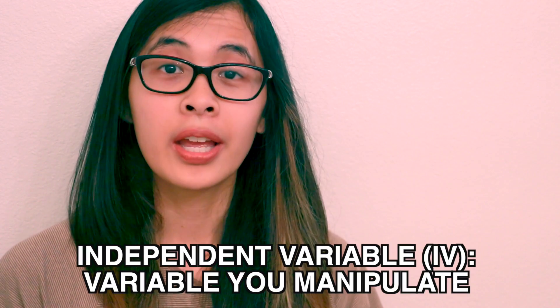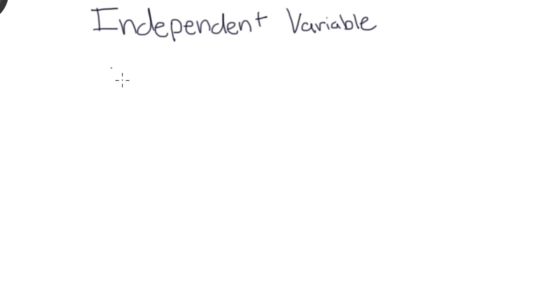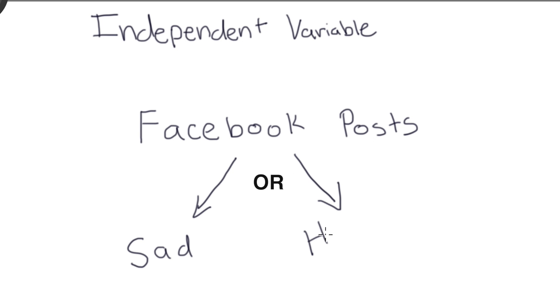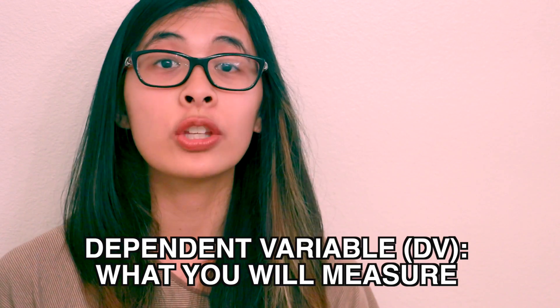Step four: experiment. Figure out your independent variable — this is the variable you will manipulate. In this case it will be the emotional content expressed on the Facebook newsfeed. Next, figure out your dependent variable, or what you will measure. In this case it will be the emotionality expressed in a person's own status update.